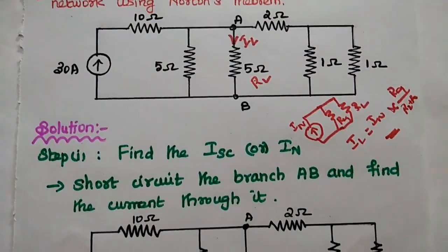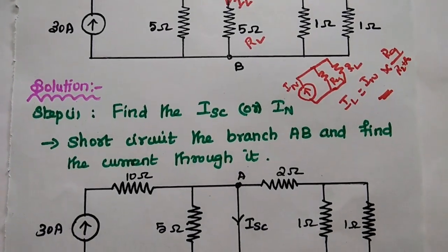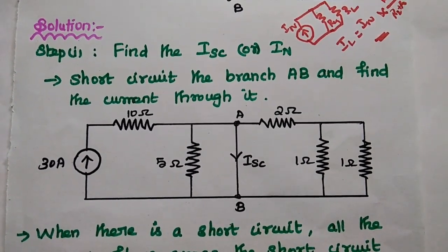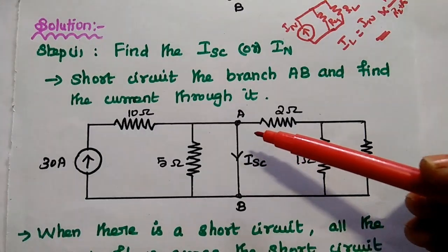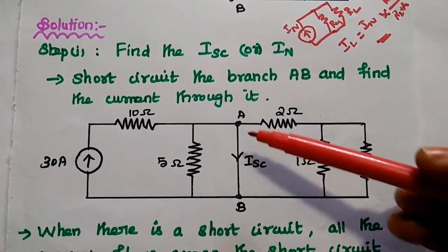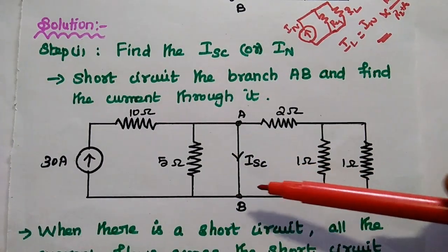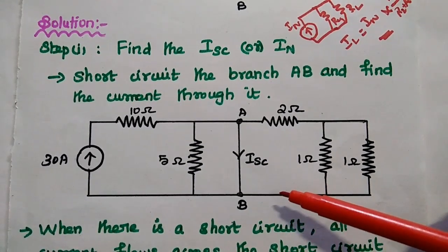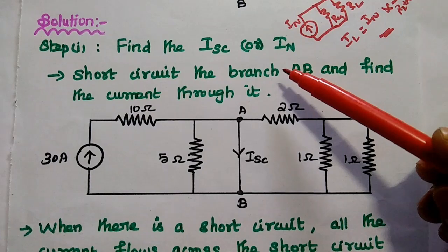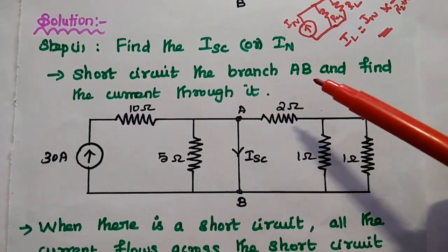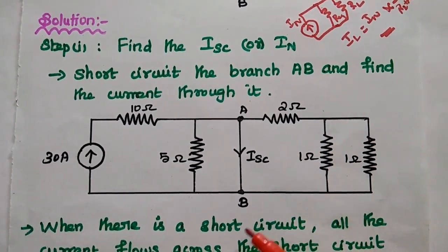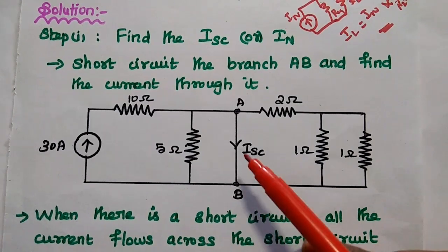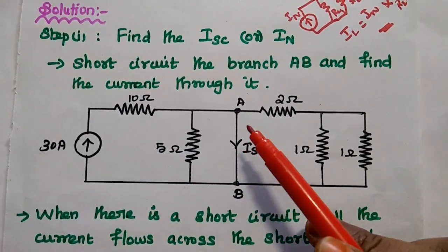In the solution part, first we are going to find out the Norton current, which is also known as short circuit current. We are going to short circuit the branch for which the current is to be calculated — that is branch AB. We are going to make branch AB a short circuit, and find out the current through this short circuit path.